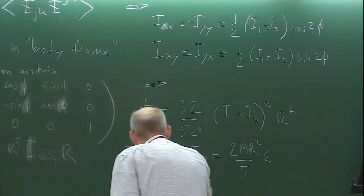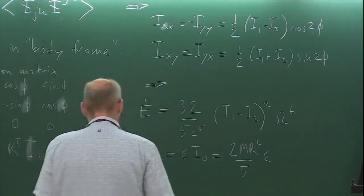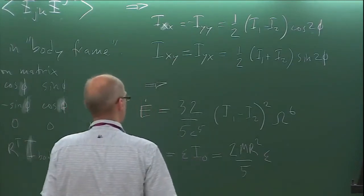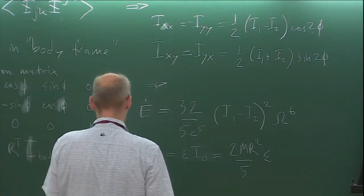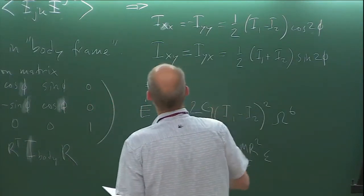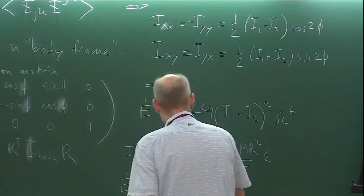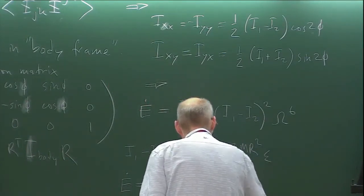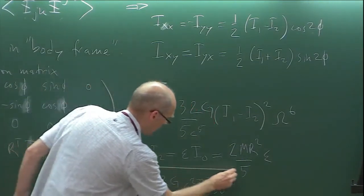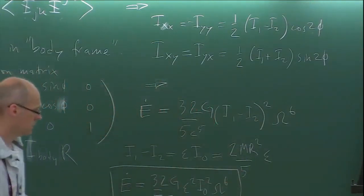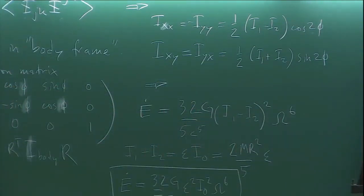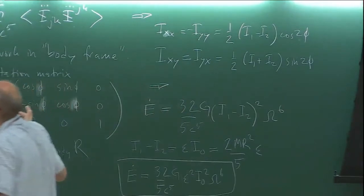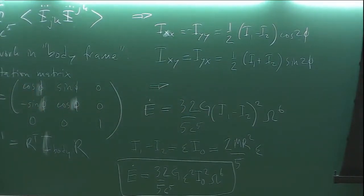The typical approach is to write the difference as a small deviation — an ellipticity epsilon — away from what it would be if it were spherical. For a uniform density sphere, the moment of inertia is 2mr-squared over 5. Plugging this back in, the luminosity becomes proportional to epsilon-squared, with some numerical prefactor and units out front. So the final answer is L_GW = (32G/5c^5) times epsilon-squared times I_0-squared times omega-to-the-sixth. This tells me that if I build a cigar-shaped star, it radiates gravitational waves at this rate.